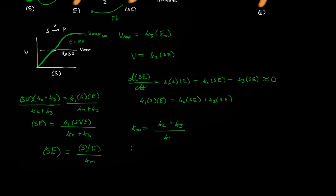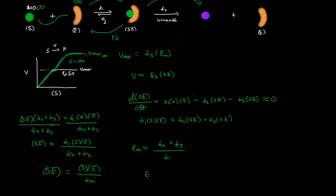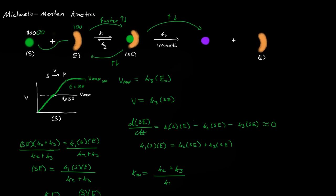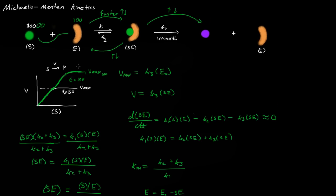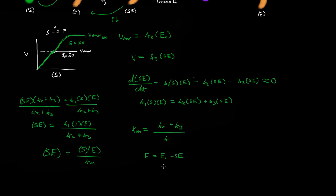We're not done yet, because we don't actually know the concentration of free enzyme [E]. However, we know that free enzyme equals the initial enzyme concentration minus the enzyme tied up in the substrate-enzyme complex: [E] = E₀ − [SE]. The enzyme is only in two locations — either free or in the substrate-enzyme complex.